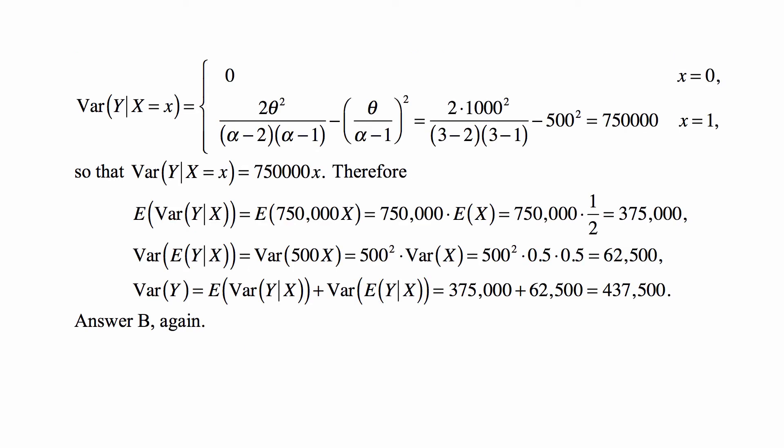And the variance of Y, given that X = x, is 0 when X = 0. Remember that formula 2θ²/[(α-2)(α-1)] is a formula for the second moment. So the variance is that minus the square of the first moment. When you plug in the numbers, that's 750,000, and the variance can be written as 750,000X.